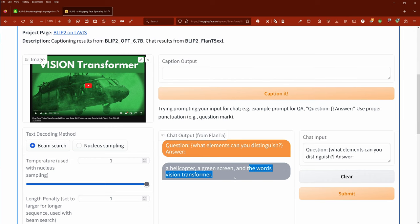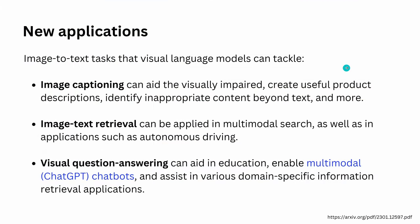The answer is: processing a helicopter, a green screen, and the words 'Vision Transformer.' Image-to-text tasks that visual language models can tackle include image captioning for the visually impaired, creating useful product descriptions, and identifying inappropriate content. You also have image-text retrieval, which can be applied in multimodal search and autonomous driving, as well as visual question answering.